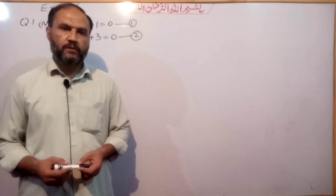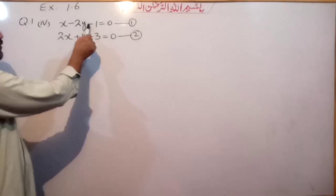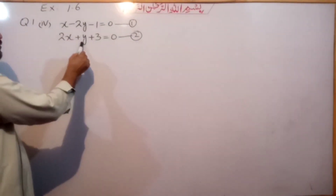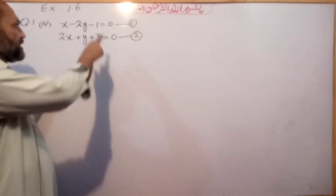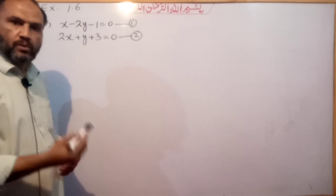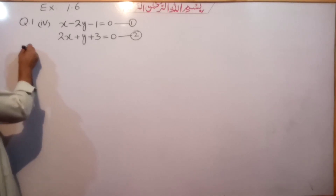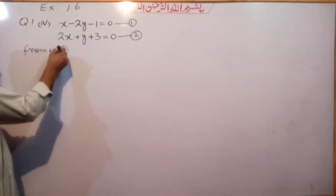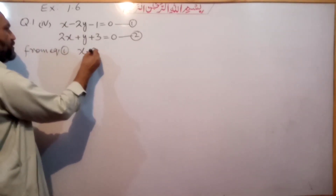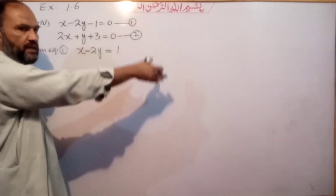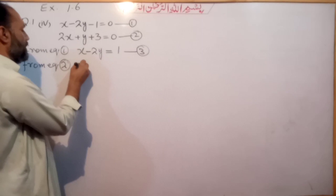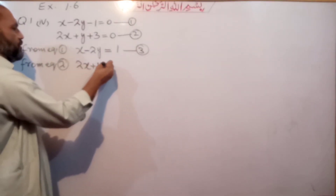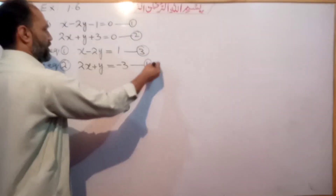Now for question number 4: the equations are x minus 2y minus 1 = 0, and 2x plus y plus 3 = 0. Rearranging the constants to the right side: from equation 1 we get x minus 2y = 1 (equation 3), and from equation 2 we get 2x plus y = minus 3 (equation 4).